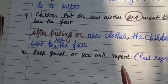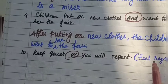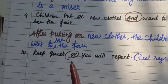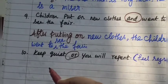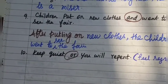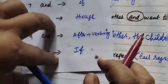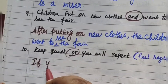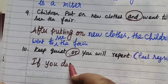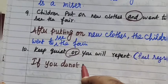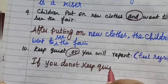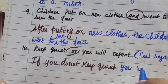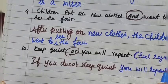Keep quiet or you will repent. Repent means feeling regret — any punishment is deserved. In our rules, if 'or' is used, we use 'if'. So: if you do not keep quiet, you will repent.